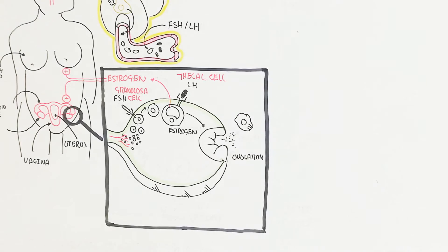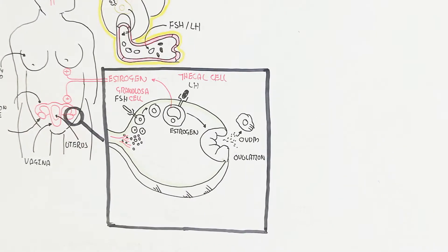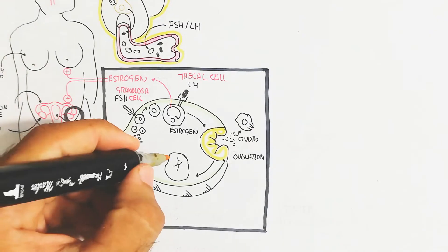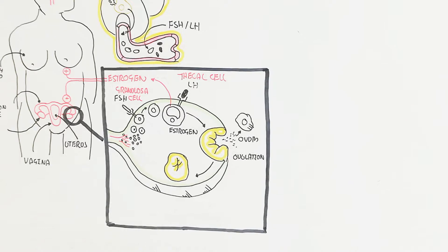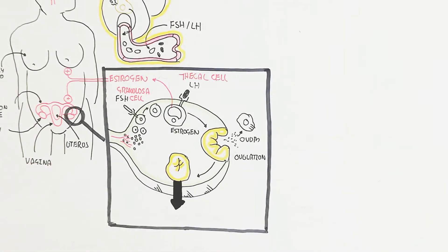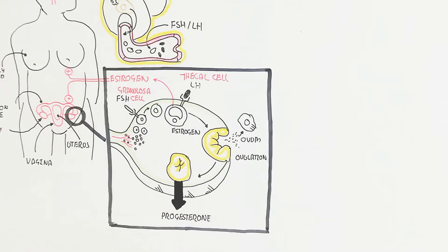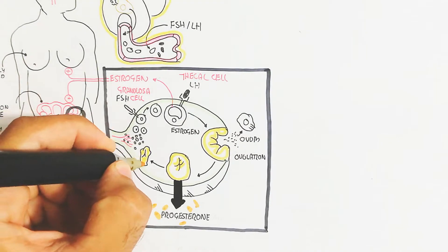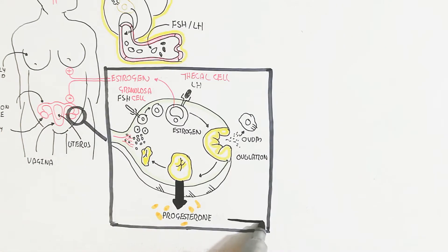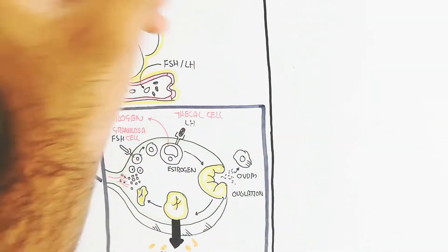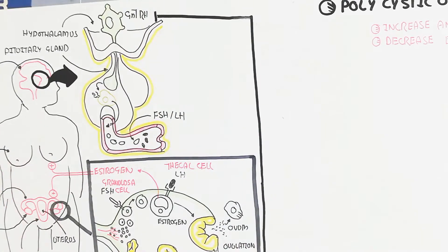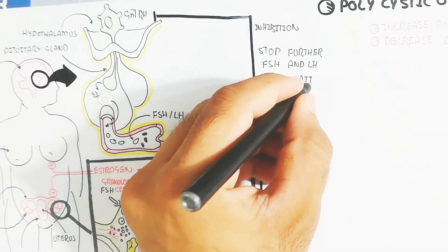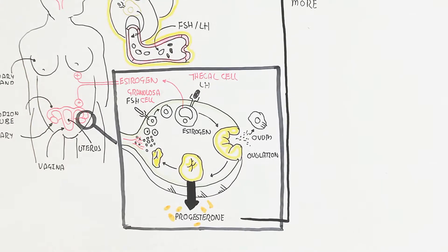Estrogen release triggers ovulation, and the ovum is released into the fallopian tube. After ovulation, the corpus luteum forms — a yellowish glandular structure that produces progesterone. This progesterone targets the endometrium for vascularization and thickening. On the other hand, progesterone inhibits GnRH from the hypothalamus via negative feedback, which inhibits further follicle maturation. If pregnancy occurs, progesterone increases to maintain the corpus luteum and stops further FSH and LH release.